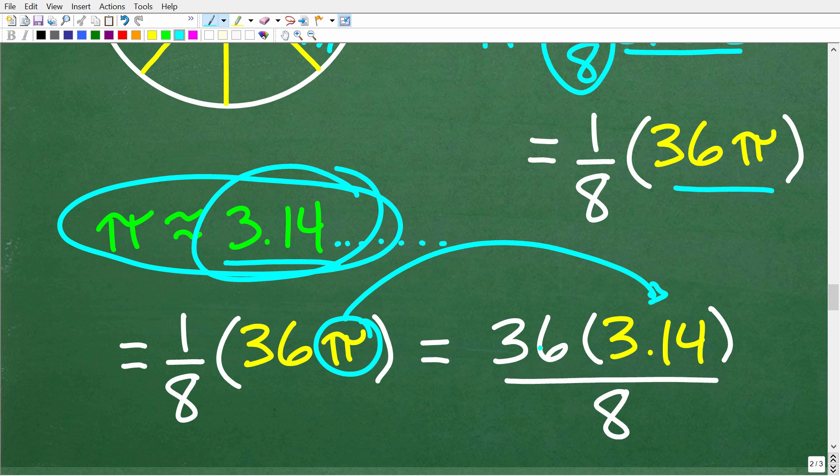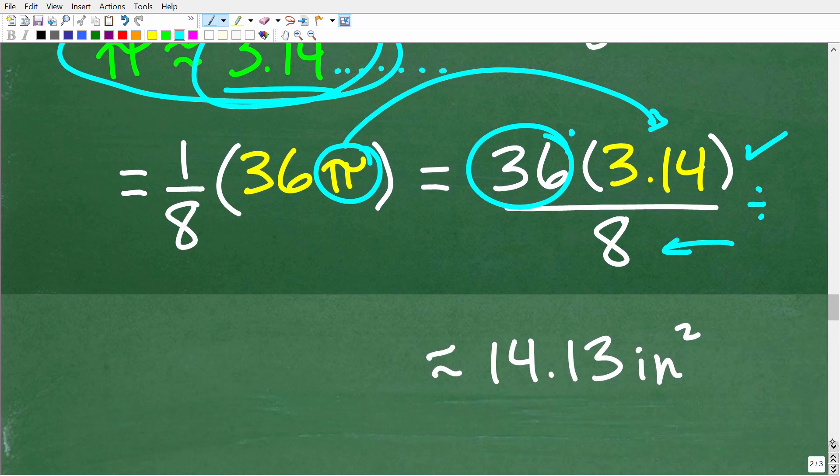So that means we have to break out our calculator and take 36, multiply it by 3.14, get that answer and then divide it by eight. When you do all that number crunching, you're going to get approximately 14.13.